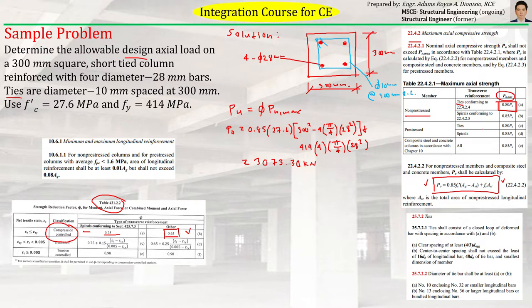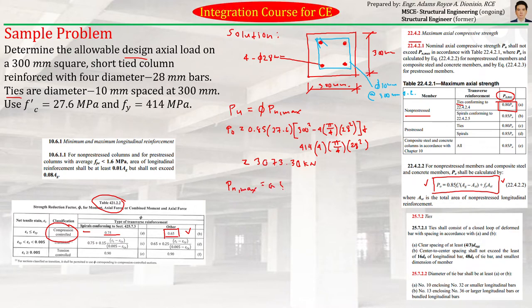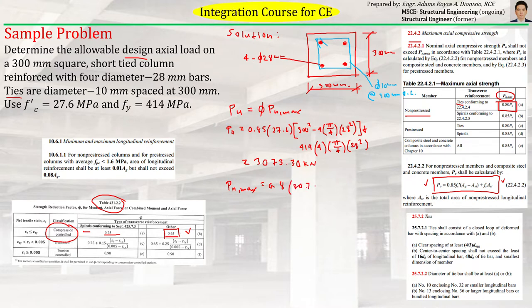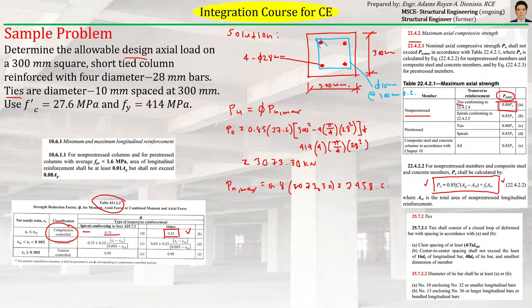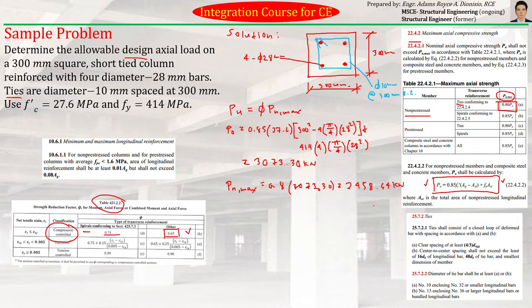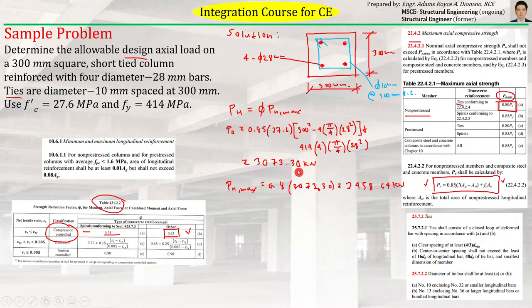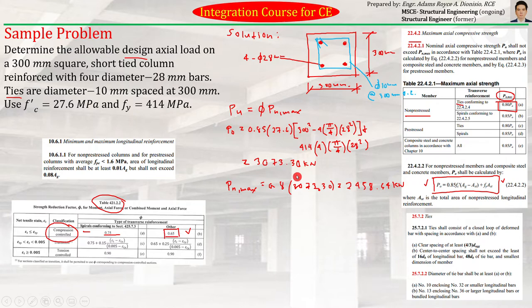And since our PNMAX is 0.8 times PO, therefore, our PNMAX will be equal to 0.8 times PO, which is 3,073.30. So this will be 0.8 times 3,073.3. This will be 2,458.64 kilonewtons. So that's the maximum nominal actual strength of our column allowed by the code. Even though the maximum it can supposedly resist is 3,073.30, the code doesn't want us to use that maximum. The code wants us to just use 80% of that, or that 2,458.64 kilonewtons.